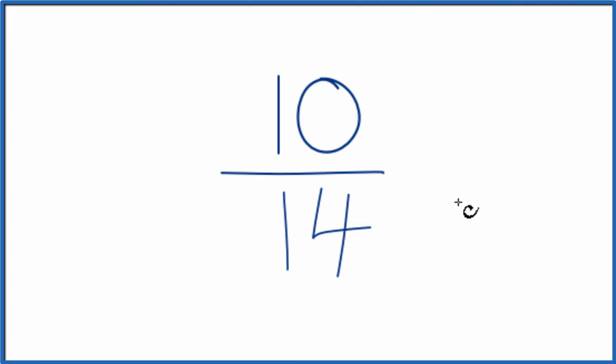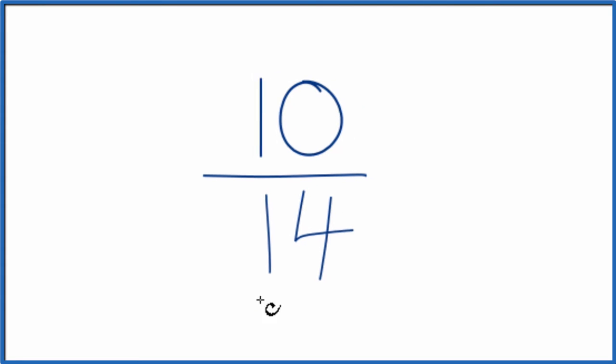We call that an equivalent fraction. We want to simplify or reduce 10 14ths down to its lowest terms. To do that, let's write the factors for 10 and for 14.